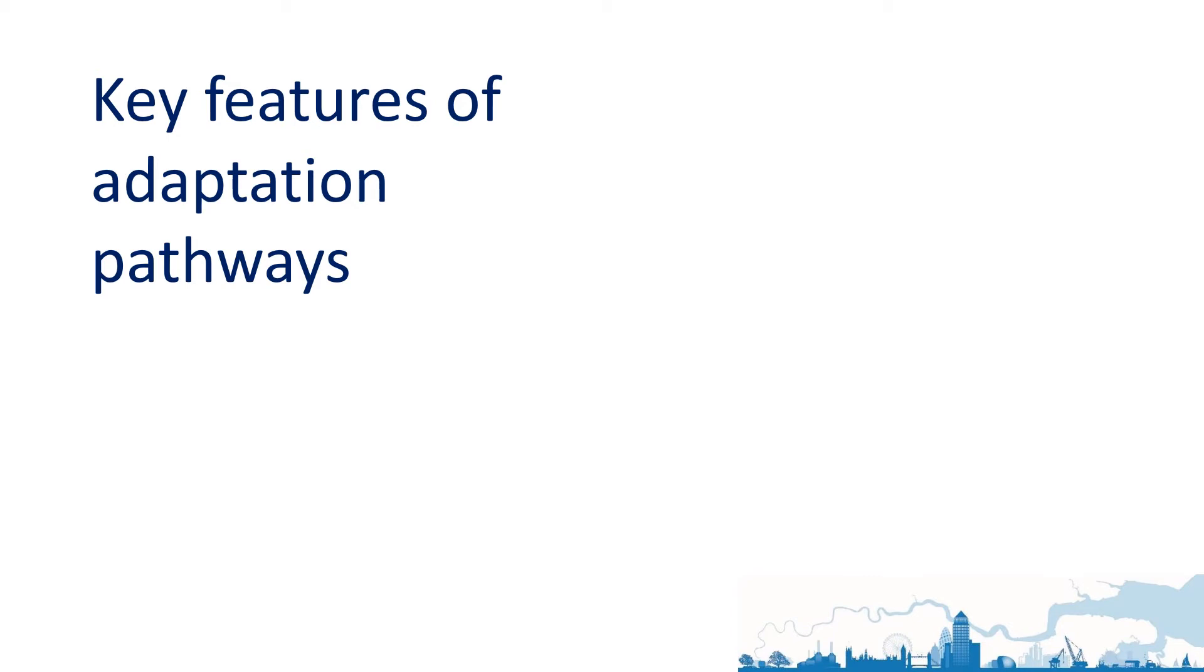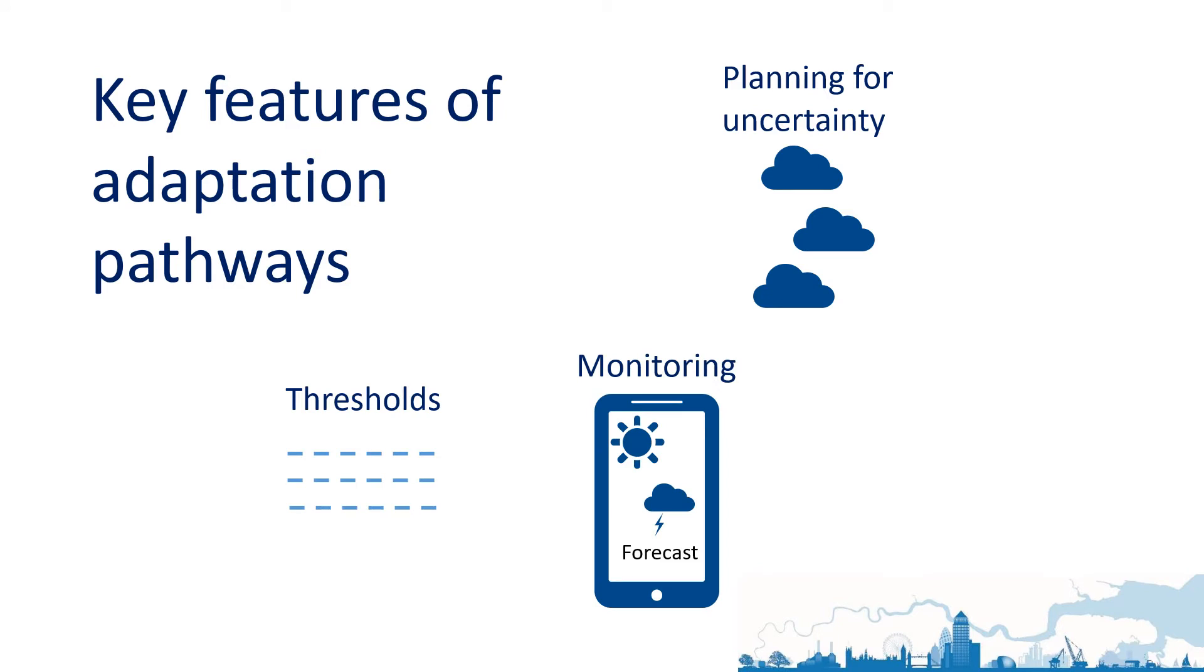Now we will look at the key features of adaptation pathways, which are planning for uncertainty, using thresholds, monitoring and decision points. We will start with an analogy and then move on to looking at how adaptation pathways work for rising sea levels.